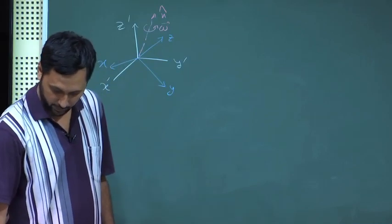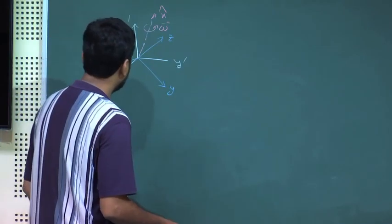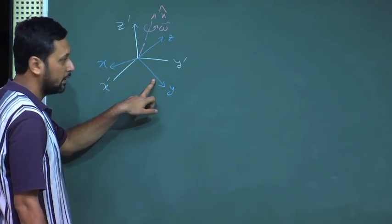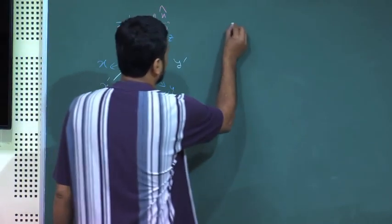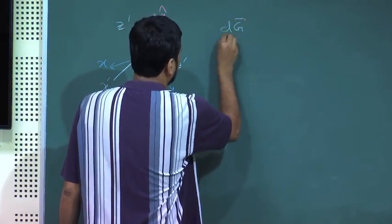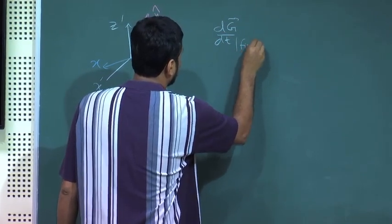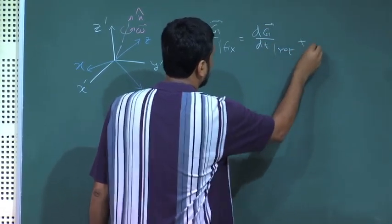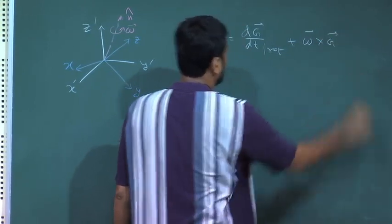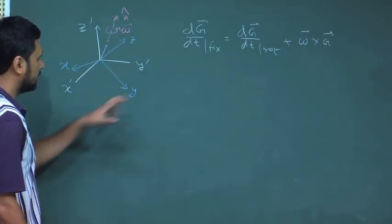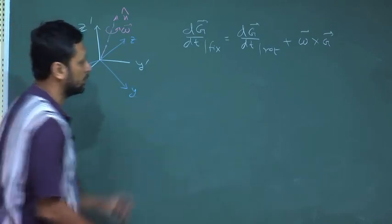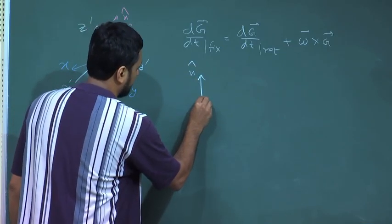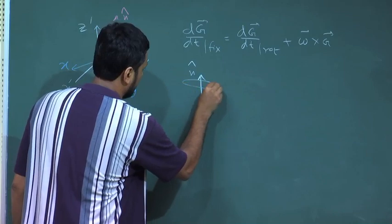In this situation, we showed that the time derivative with respect to the fixed frame and the moving frame of any arbitrary vector g are related by: dg/dt fixed equals dg/dt rotating plus omega cross g. We proved this by using a particular property of a rotating vector — if this is a fixed direction around which a particular vector is rotating.